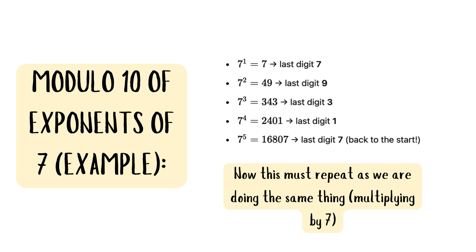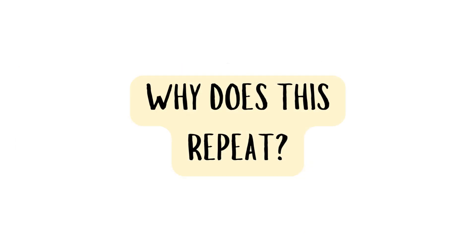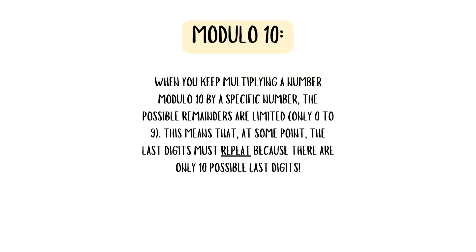This means that this must repeat as we are doing the same thing, multiplying by 7. So why do these last digits of exponents repeat? Basically, when you keep multiplying a number modulo 10 by a specific number, the possible remainders are limited, only 0 to 9. This means that at some point the last digits must repeat because there are only 10 possible last digits.